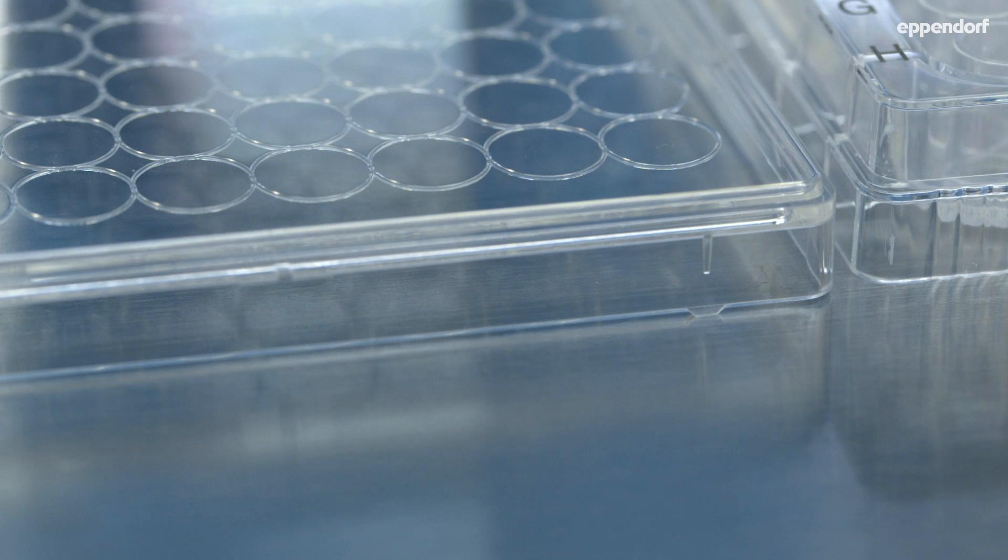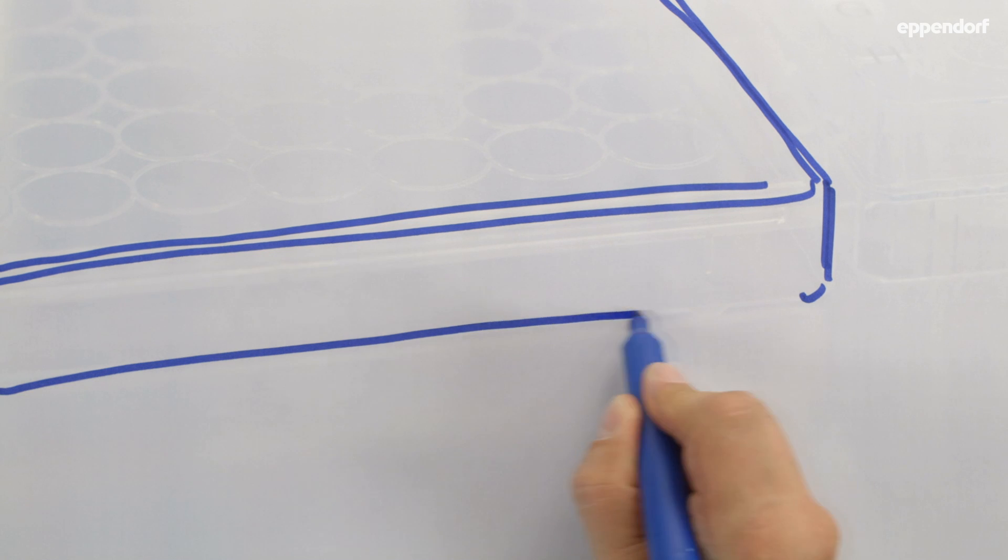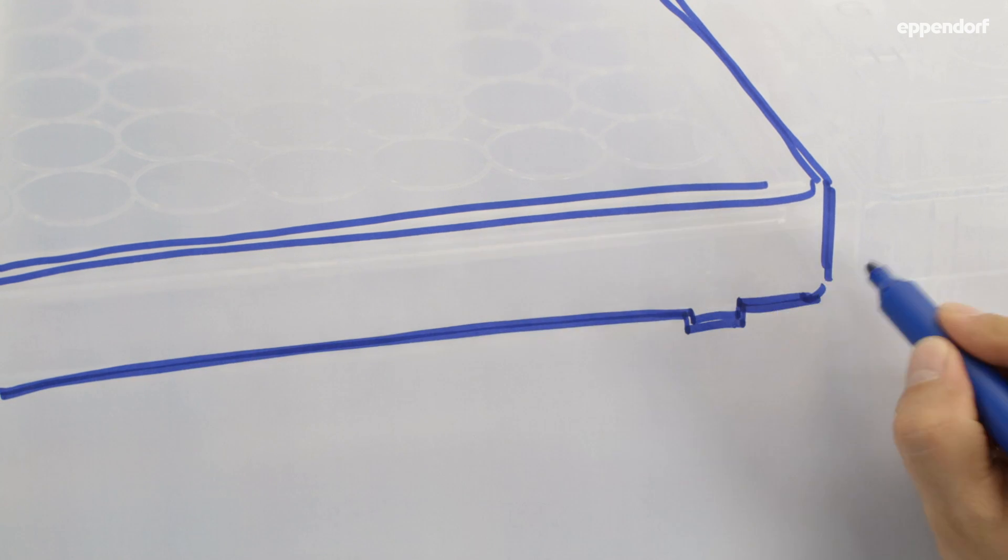Eppendorf cell culture plates have a lid with support taps, which minimise contact with the work surface if the lid is placed to one side. Thus, the risk of germ transfer is reduced to a minimum.